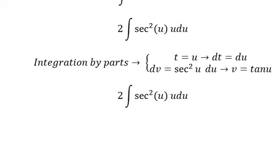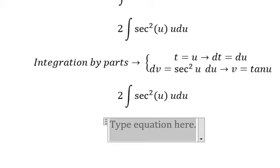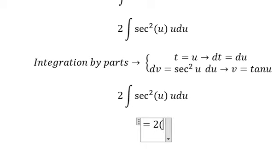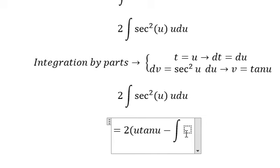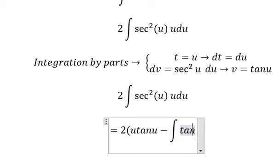Because we still have number 2 in here, so we keep going with number 2. We have t times v and dt times v, so it equals negative the integral of tan u du.